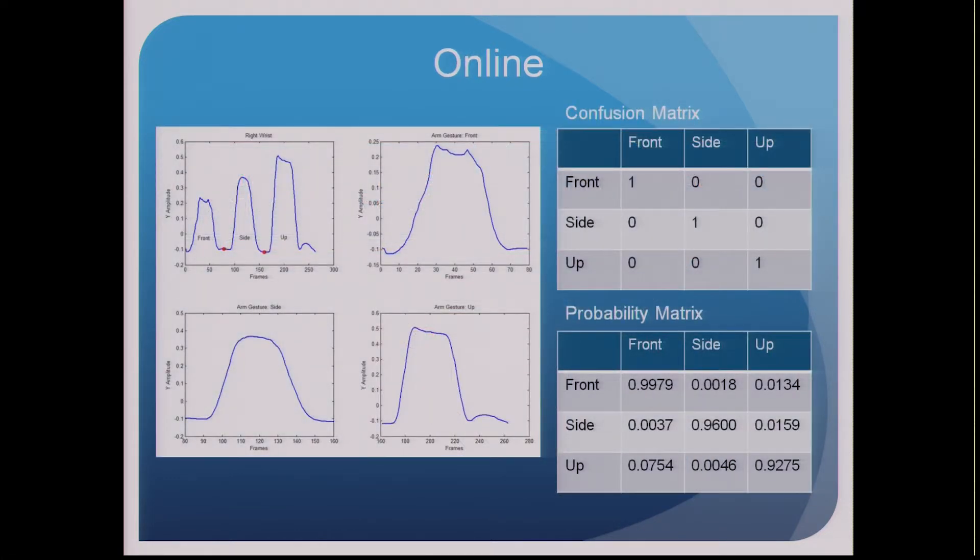Online, the newly generated model will identify and segment the gestures during run time. And so the results here display successful implementation on a shoulder rehabilitation exercise, where the user lifts their arms to the side, front, and up. The corresponding confusion matrix and probability matrix are on the screen for anyone who wants more convincing.